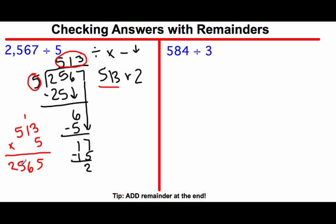So the only difference now if it has a remainder is that you're going to add the remainder at the end. So now I'm going to come back over here with my remainder of 2 and now add that in down here. So if I add a 2 here, it's going to be 2,567. And if that answer matches this number, then we know we're correct. So I know that I'm correct on this problem.